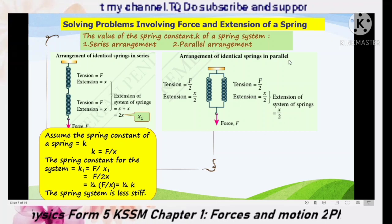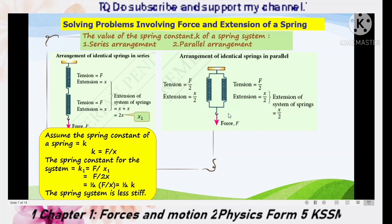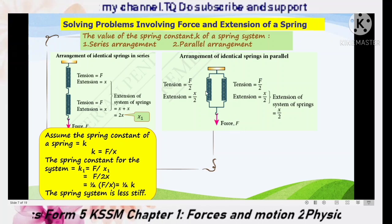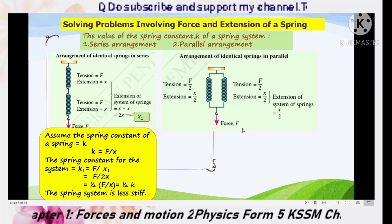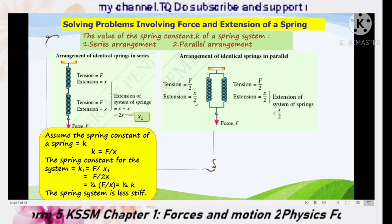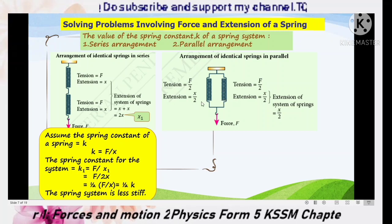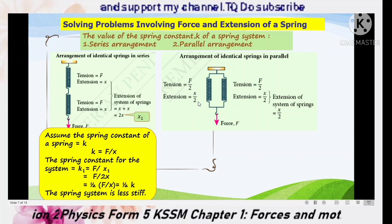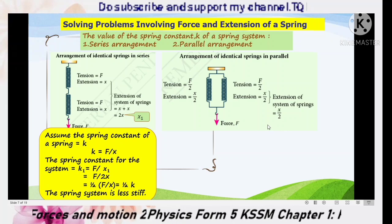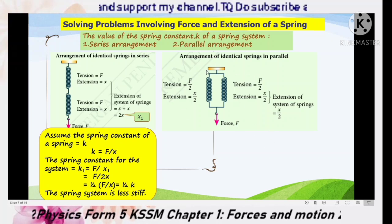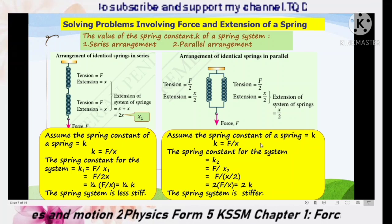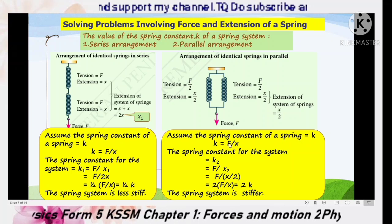Now for the parallel arrangement: the two springs together support the weight of load F, so the tension in each spring equals F divided by 2. Since F is directly proportional to X by Hooke's Law, when the force on each spring becomes half, the extension in each spring also becomes half. Thus the total extension of the spring system is X divided by 2. The spring constant for one single spring remains K, where K equals F divided by X.